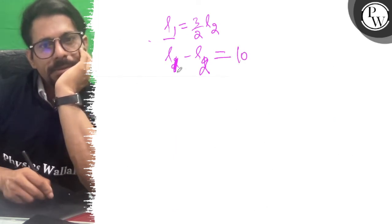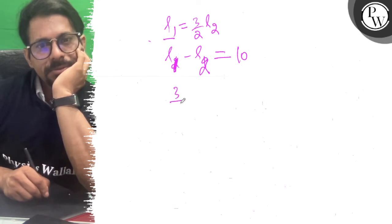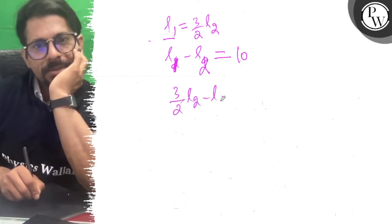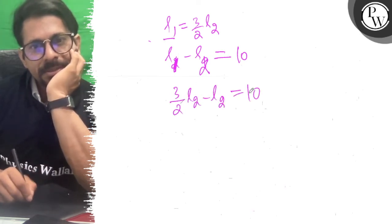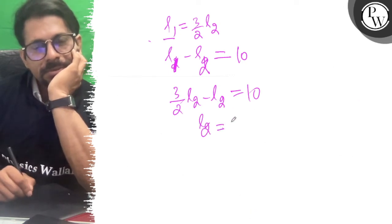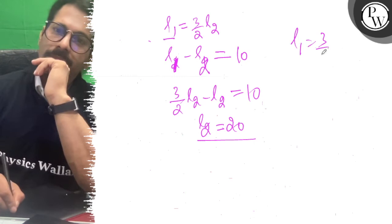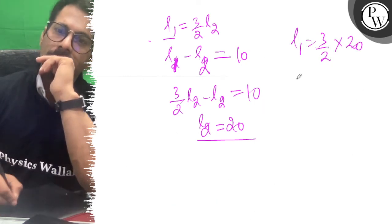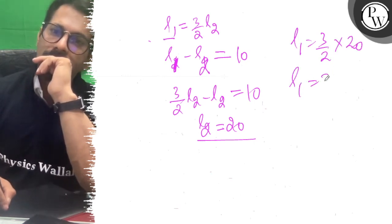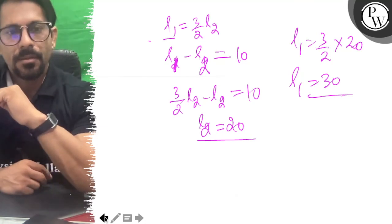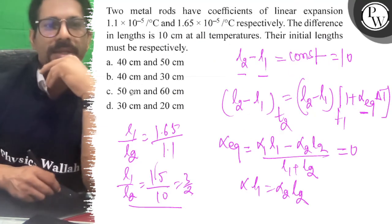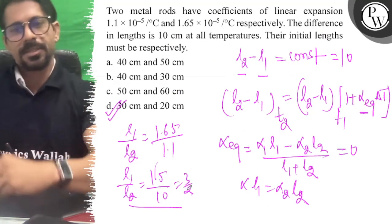10. L1 is equal to 20. L1 is equal to 30. L1 equals 30 and 20, that means the option is correct. All the best.